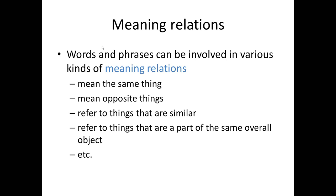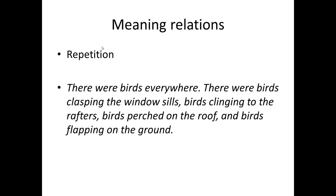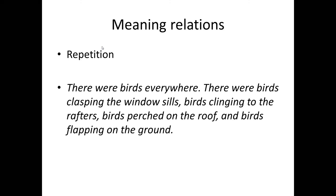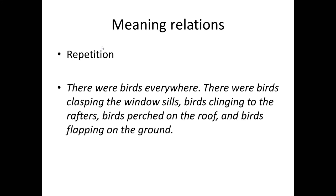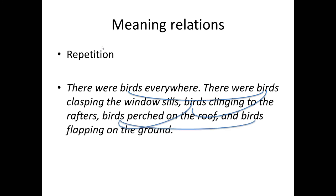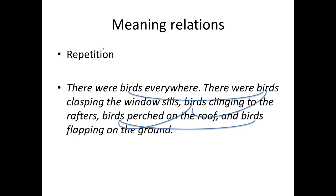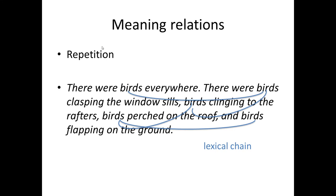The most obvious type of meaning relation is repetition of the same word or phrase. Consider the following text: 'There were birds everywhere. There were birds clasping the window sills, birds clinging to the rafters, birds perched on the roof, and birds flapping on the ground.' Here, the repetition of the word 'birds' — birds everywhere, birds clasping the window sills, birds clinging to the rafters, birds perched on the roof, birds flapping on the ground — links up each statement through what we call a lexical chain.